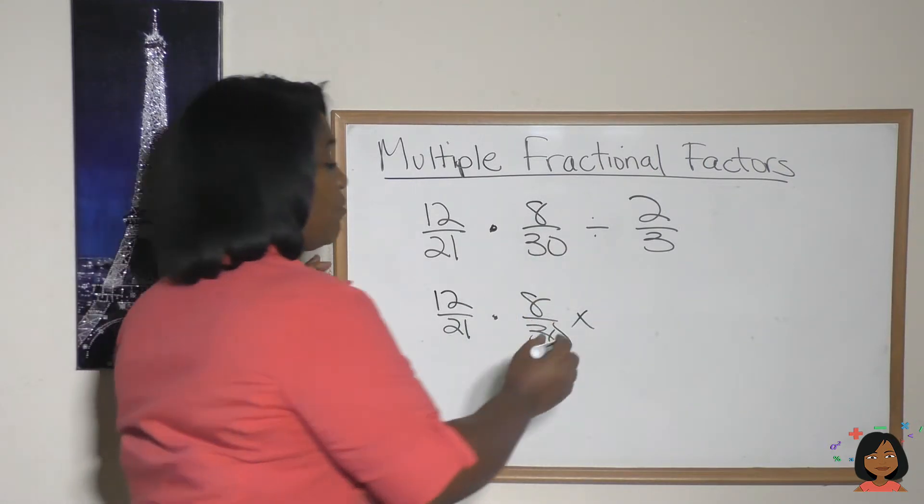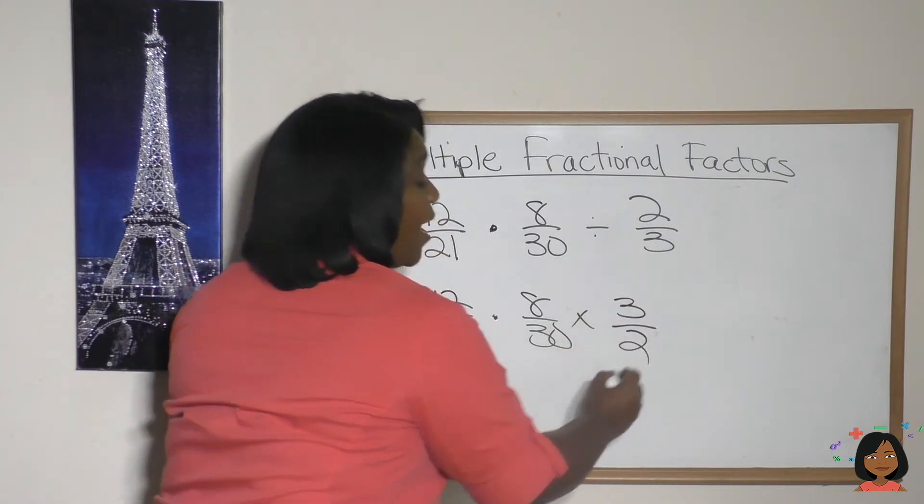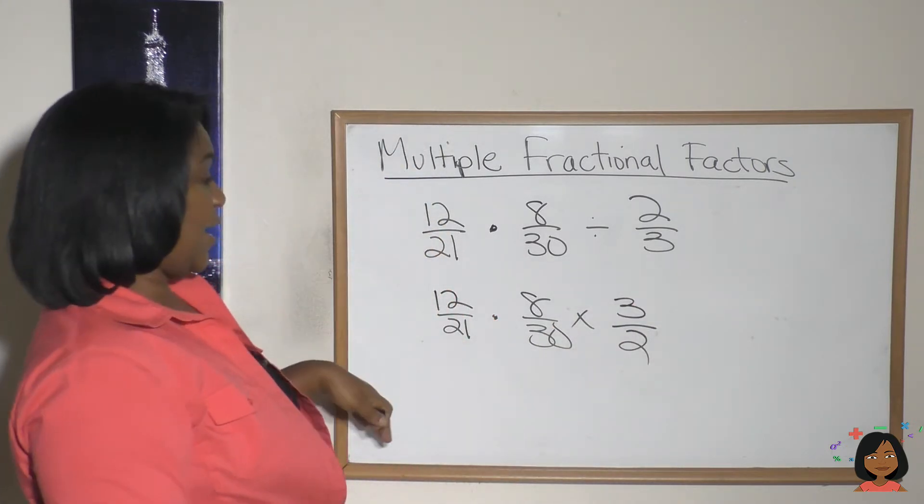We're going to make this a multiplication sign and we're going to take the reciprocal of two-thirds, which is three over two. And now we can go ahead and reduce.